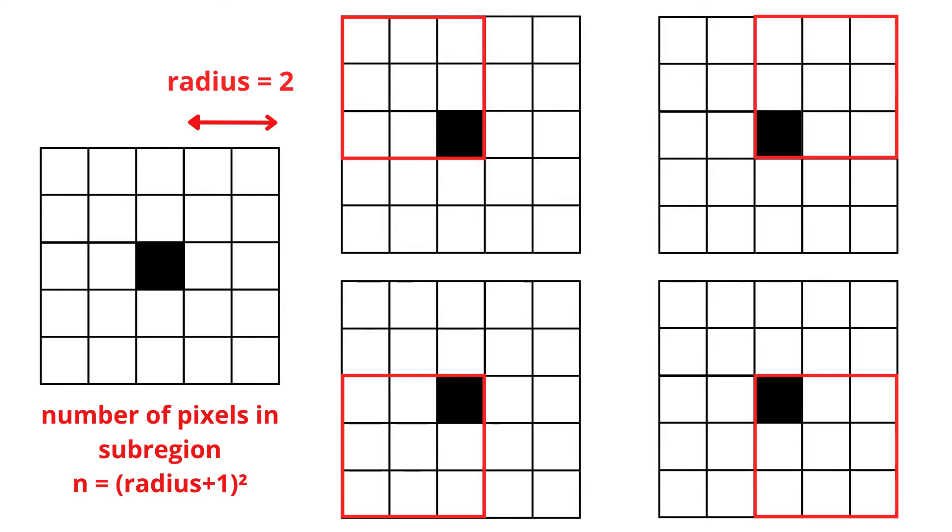The number of pixels on each subregion is the square of the radius plus 1. In this example with radius 2, n is 9.